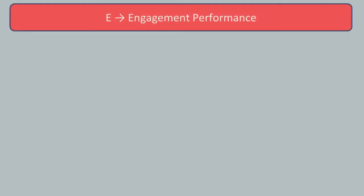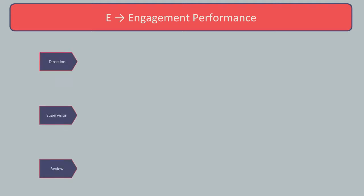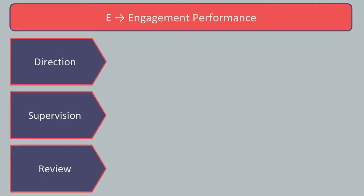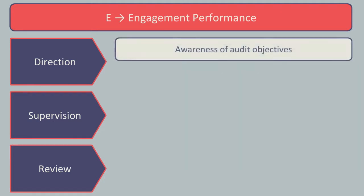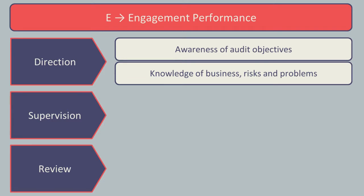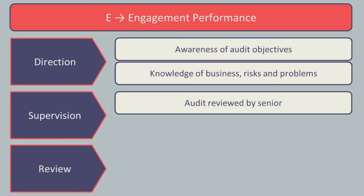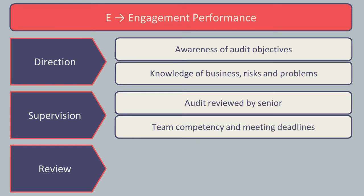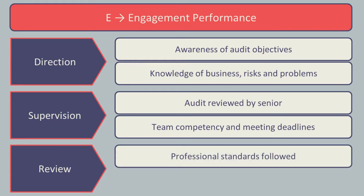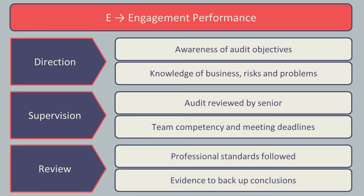Finally, E is for engagement performance. This looks at the overall performance of the audit assignments across the audit firm and is made up of three elements: direction, supervision, and review of the audit. The direction focuses on ensuring everyone is aware of the objectives of the audit, knowledge of the client business, the risks, and any problems that may arise. Supervision looks to ensure the audit is reviewed by someone senior who can ensure the team is competent and deadlines are met to provide timely information for the client. The review is to ensure professional standards have been followed, that there is evidence to back up conclusions made, and that the evidence collected is sufficient and appropriate.